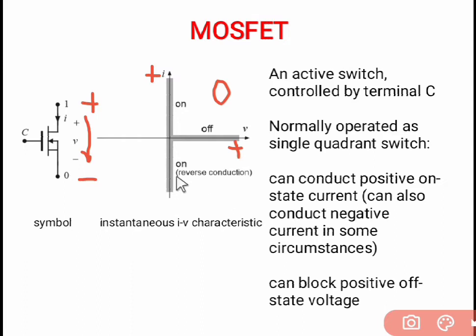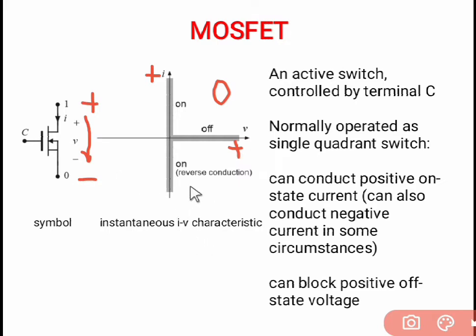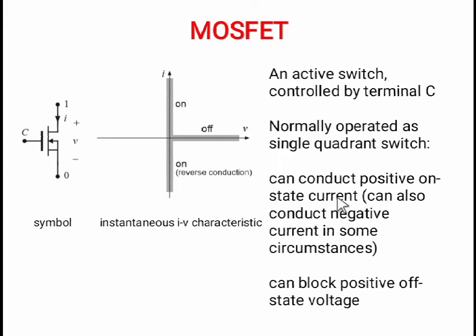There is also a reverse conduction which is a special case. The MOSFET has a body diode connected anti-parallel between the drain and source terminals. We will study in the next slide how reverse conduction occurs in the MOSFET and negative current flows. So MOSFET conducts positive current while on, blocks positive off-state voltage, and operates in two regions: the first quadrant and the fourth quadrant.